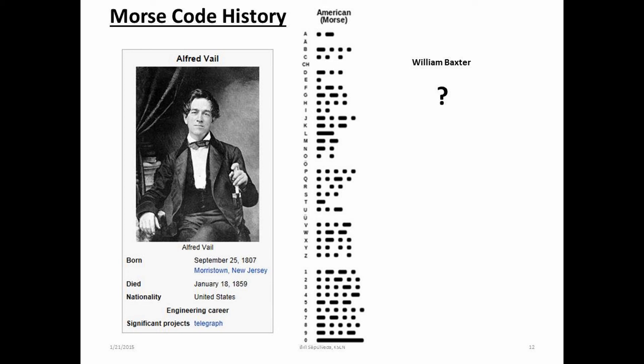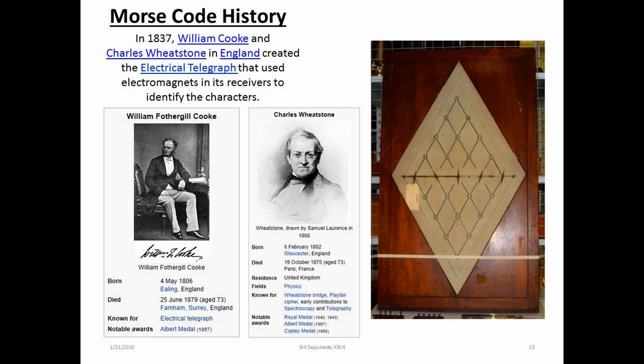Vail presented this new code to Morse, and Morse submitted the patent that took full credit and became a wealthy man. The original creator of the Morse Code, Alfred Vail, received no credit.